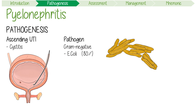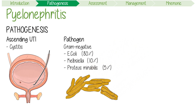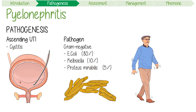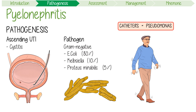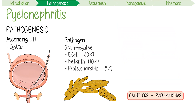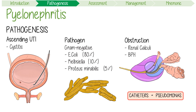Other common pathogens include Klebsiella, especially in diabetics at about 10%, and Proteus mirabilis at 5%. However, in older hospitalised patients who tend to need catheters, other infections like Pseudomonas are much more common. Additionally, obstruction of any cause — including renal calculi or benign prostatic hyperplasia — often drives infection due to urinary stasis.